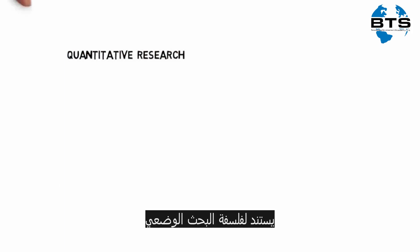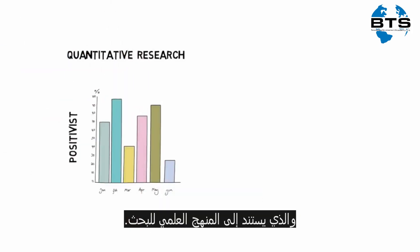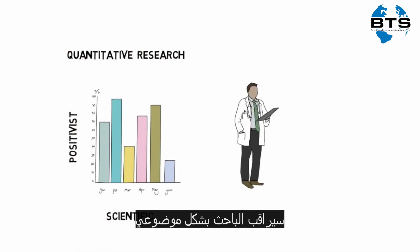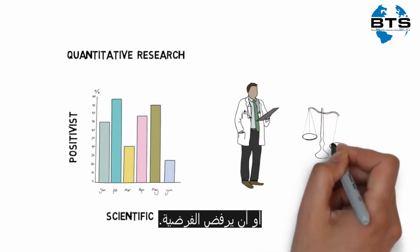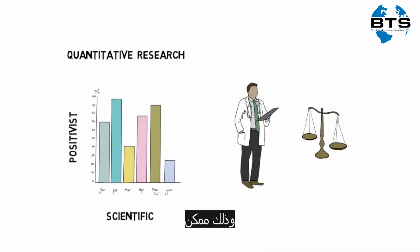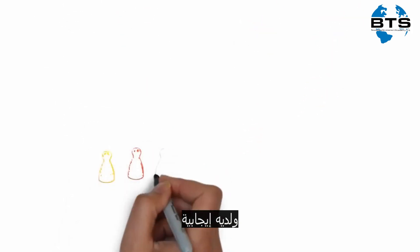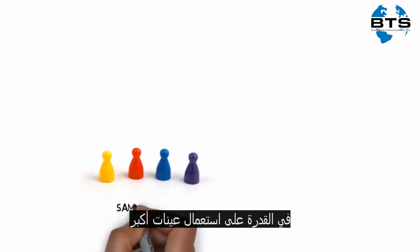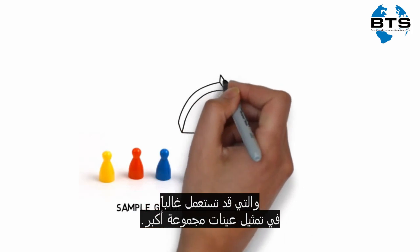Quantitative research follows a positivist research philosophy, which is based on a scientific approach to research. The researcher would observe objectively in an attempt to either prove or disprove their hypothesis. This is made possible through the collection of data that can be measured. It has the advantage of being able to use larger samples, which would then often be used to represent a larger group.